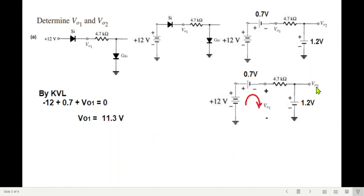Now V02 is very simple, because whatever is the voltage here that will appear across the output. So straight away from the figure we can write that V02 is 1.2 volts. Remember, this 1.2 volts is for the gallium arsenide.